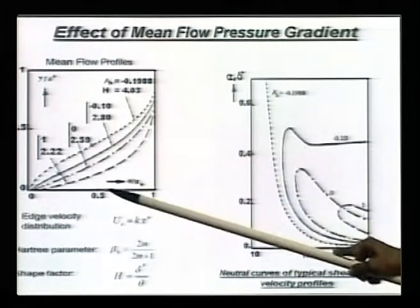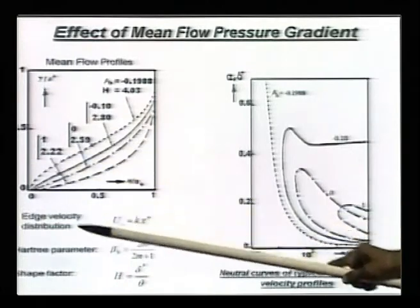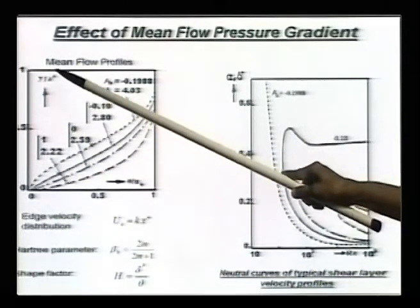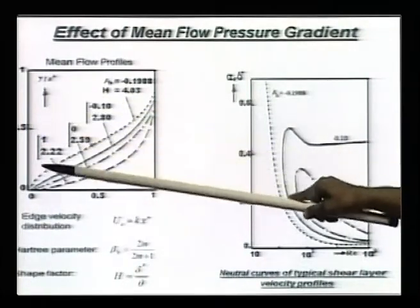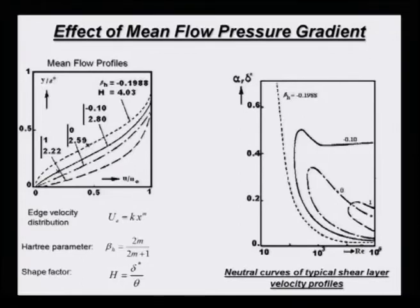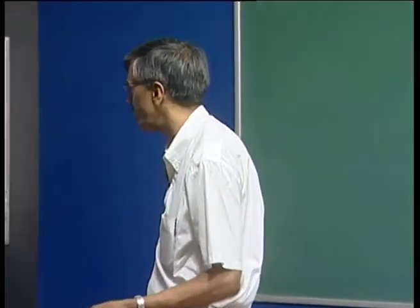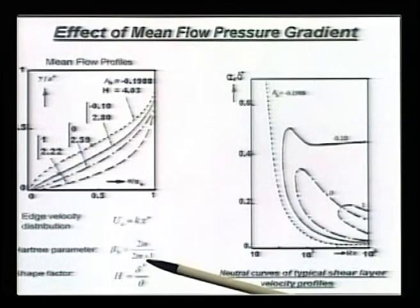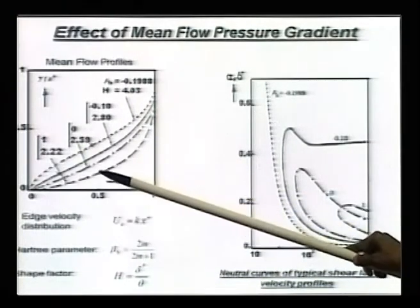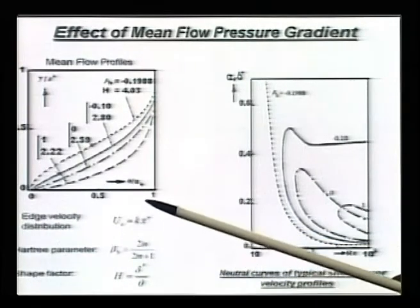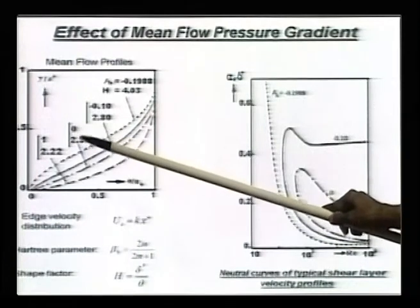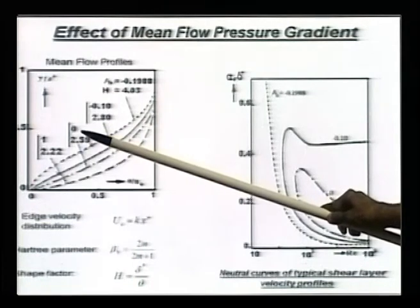H is an equally important parameter called the shape factor. What you are seeing here is a velocity profile - we have plotted u by u_e versus the height y over delta star. You expect the flow to reach close to a value of 1 at delta star, but at the boundary layer thickness, which would be probably 2 or 3 times this delta star, you would really get say 99.9 percent. We will characterize the flow profile by these two parameters beta_h and capital H. A zero pressure gradient flow corresponds to m equal to 0, that is beta_h equal to 0, and that is what this is - the Blasius profile.